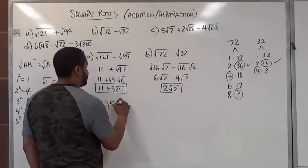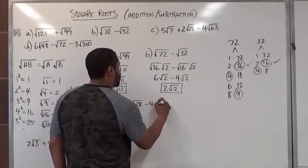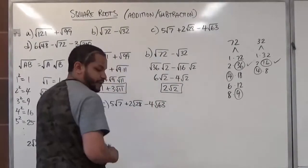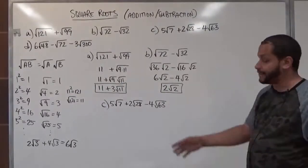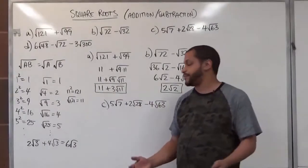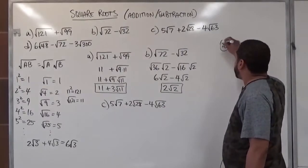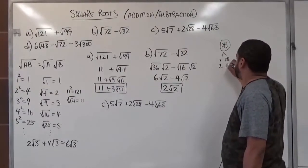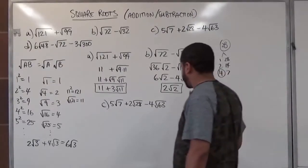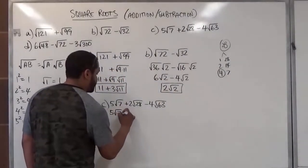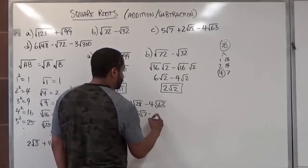Moving on to Part C: 5 radical 7s plus 2 radical 28s minus 4 radical 63s. We have a different set of factors for each term. First, note that 7 is a prime number, so the square root of 7 cannot be broken down. For 28, however, the factor pairs are 1 and 28, 2 and 14, and 4 and 7 — where 4 is the perfect square. So we'll use 4 and 7, giving us 5 radical 7s plus 2 times radical 4 times radical 7 minus 4.